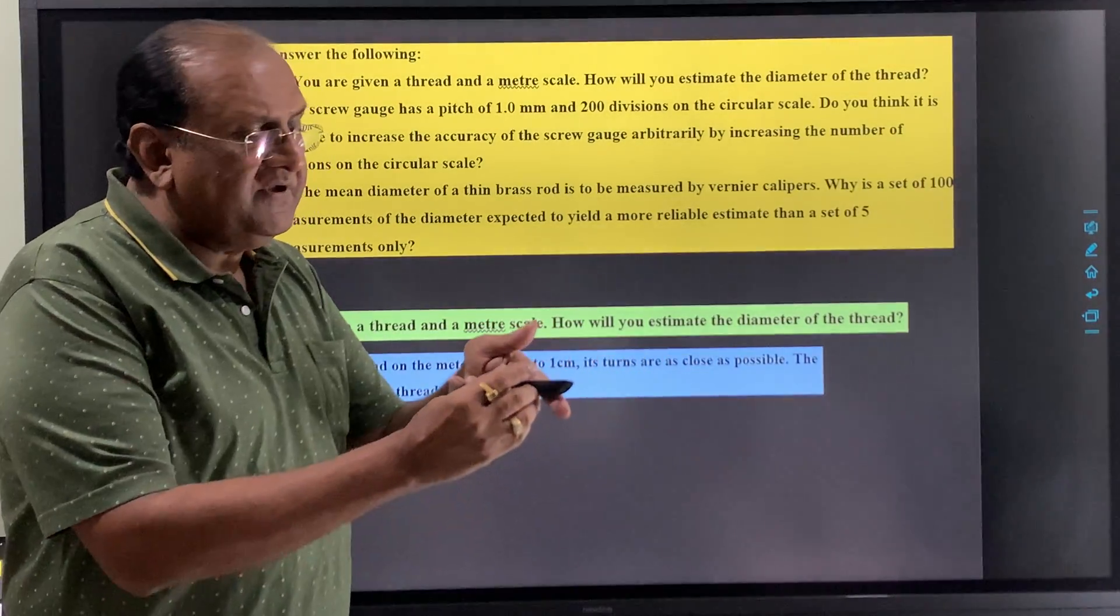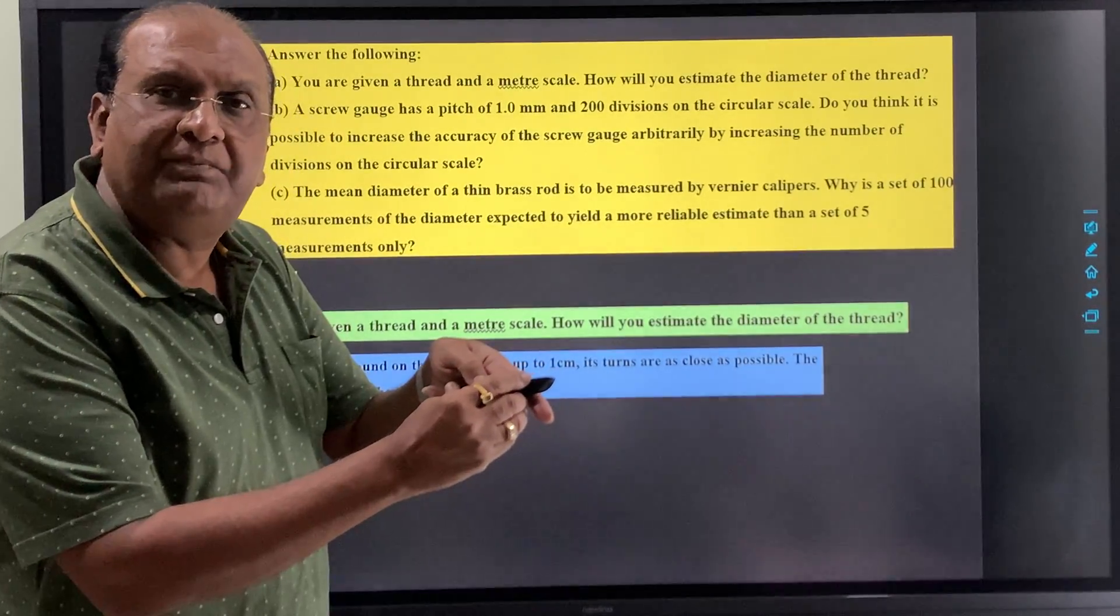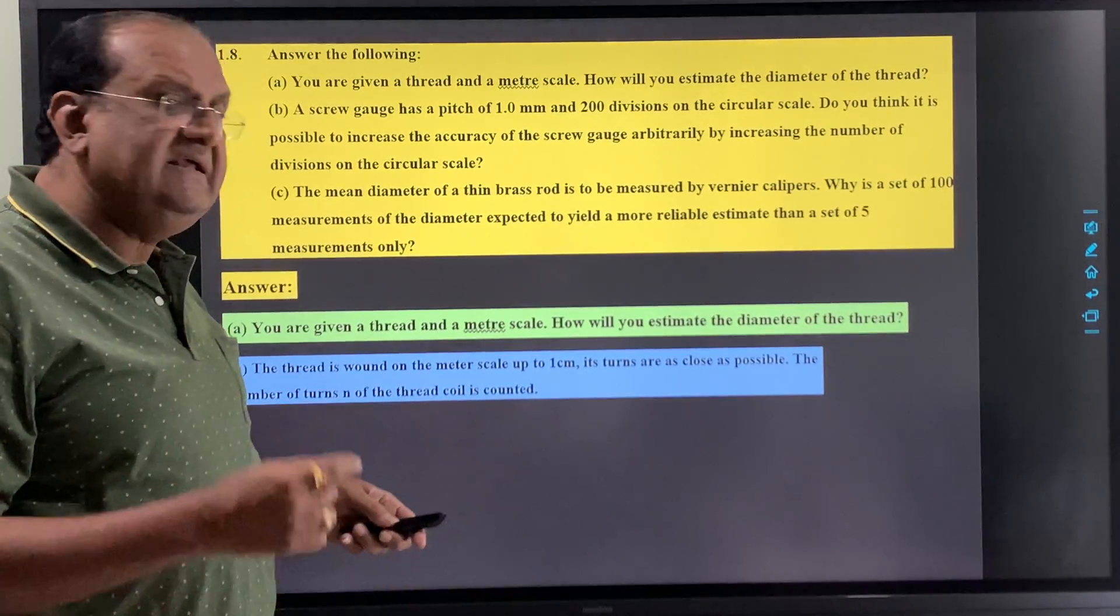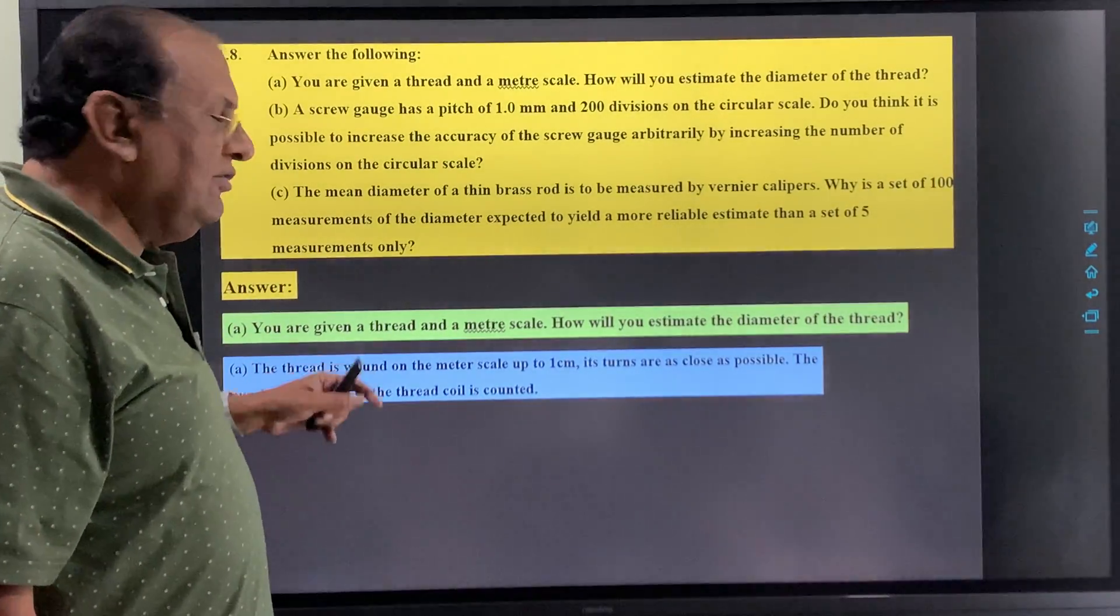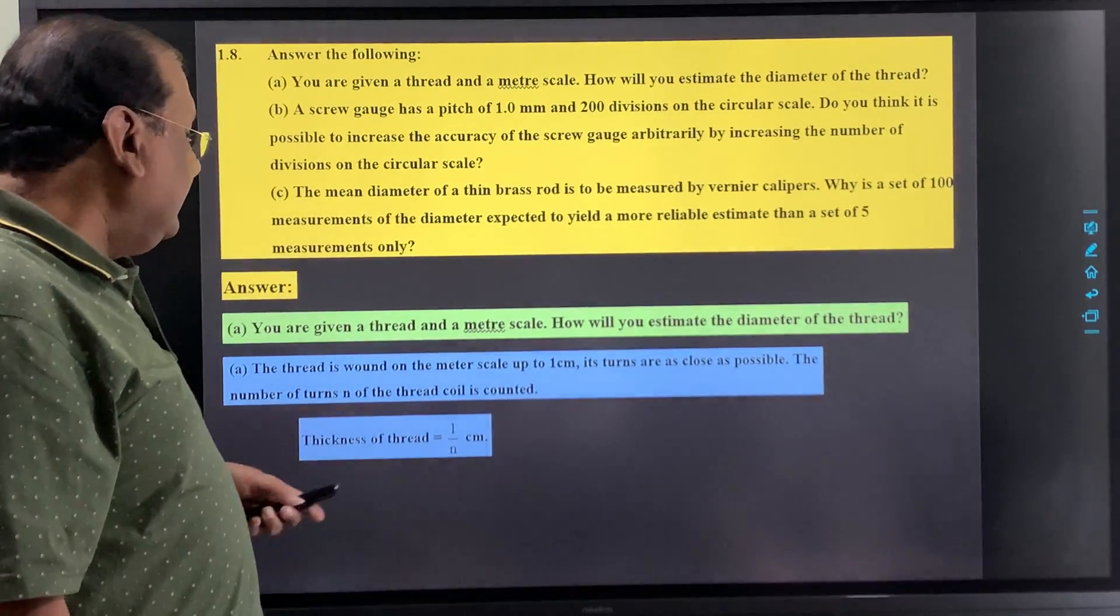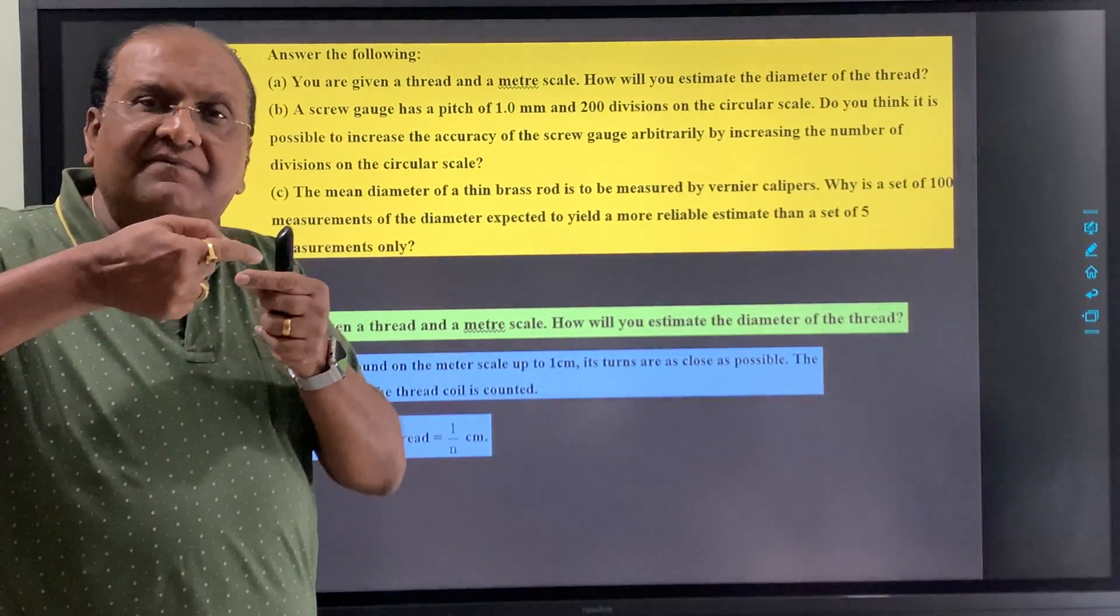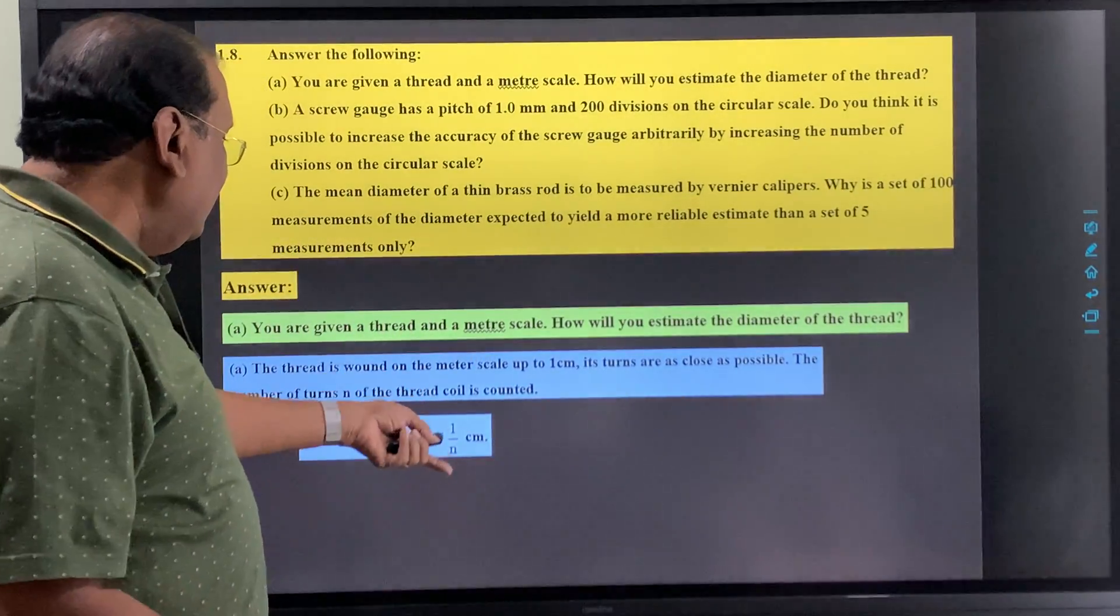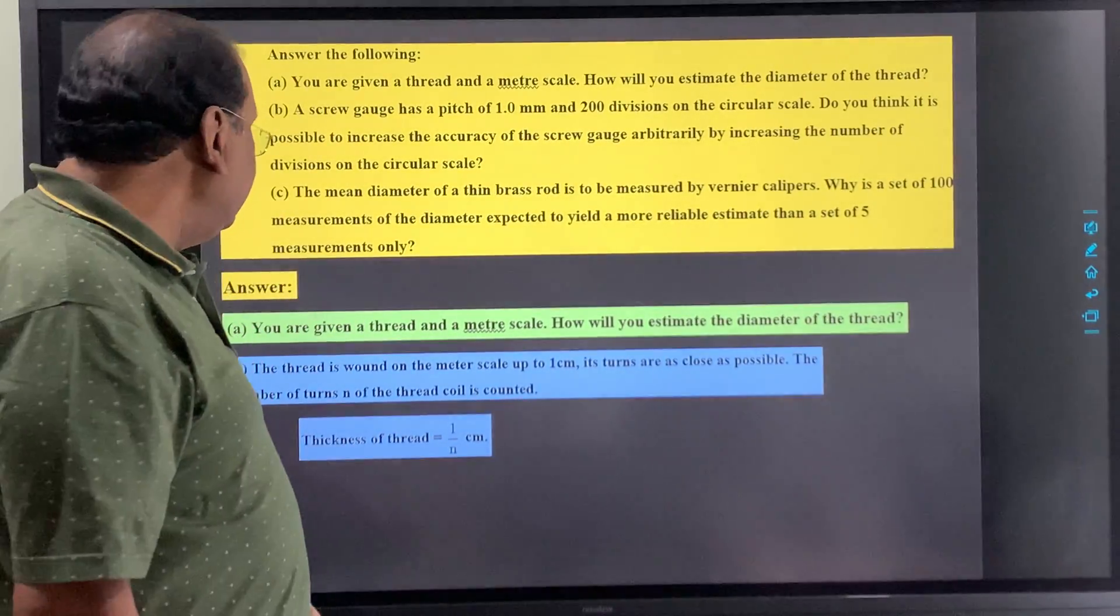Now all the turns should be close to each other, then the number of turns on the thread is counted. If the number of turns is n in 1 cm, then one thread's round thickness will be simply one by n centimeter. So thickness of the thread can be calculated this way.